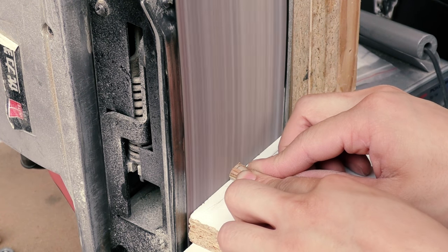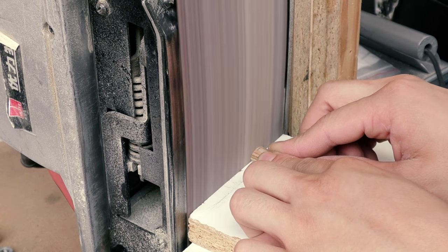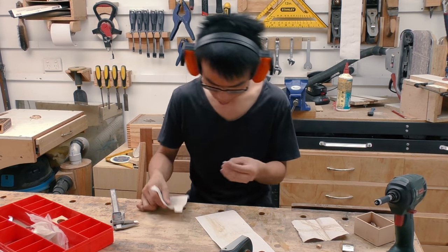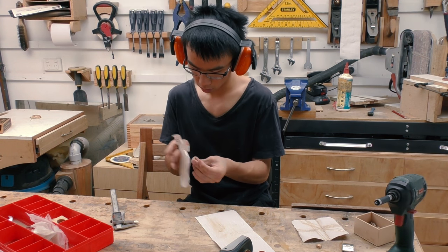For the middle strap pieces, I can jump straight to the belt sander as it is symmetrical. Then I can follow the same steps as the side strap pieces. Repeat this about 50 times depending on your wrist size and you'll need some mental help. I mean, you'll be on your way to be a great woodworker.